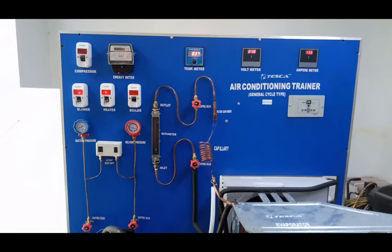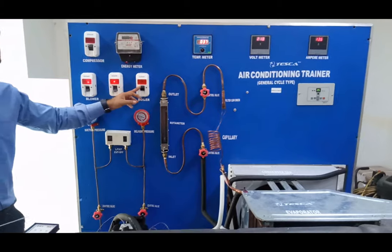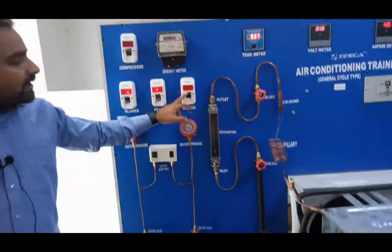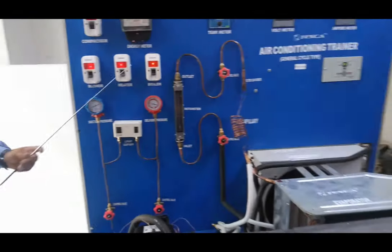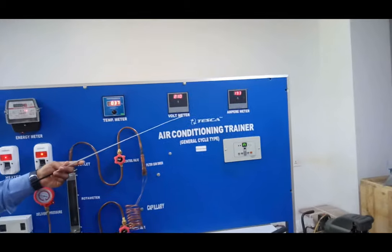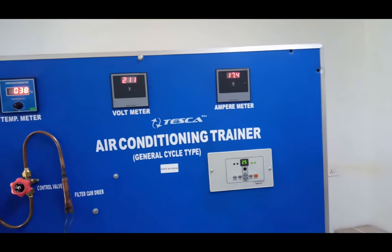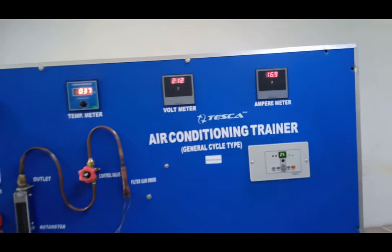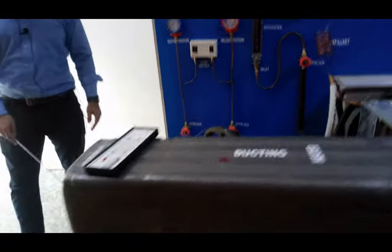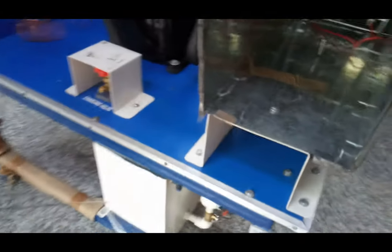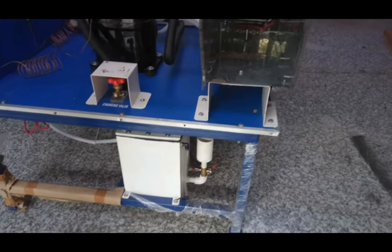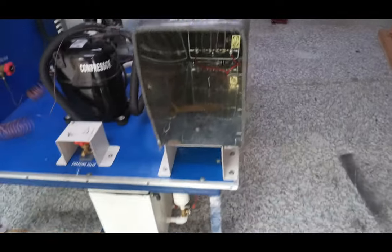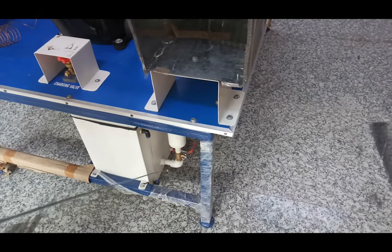Now for humidification, the boiler is provided in this panel. The boiler on-off switch is here. We can turn on the boiler switch. The boiler is on and we can see the load changes — it has increased at the ammeter because the boiler has started. The boiler is located at this location. Always make sure the boiler is filled with water before starting it. The steam generated through this boiler is supplied inside the air duct.